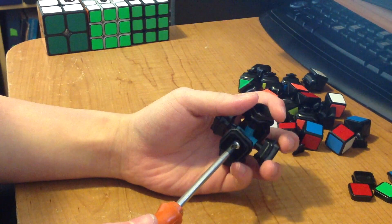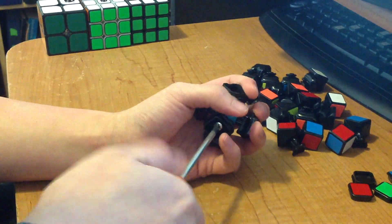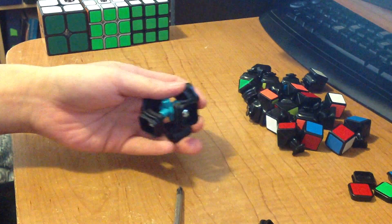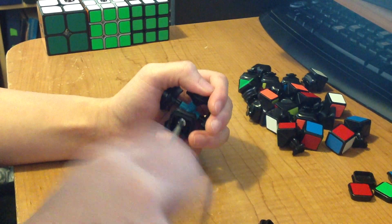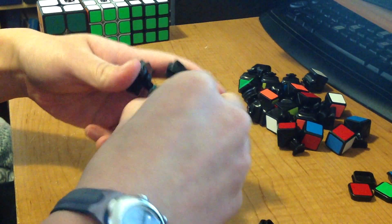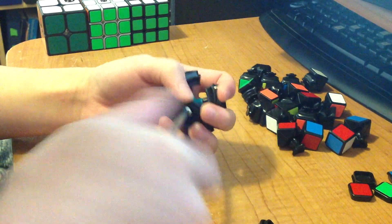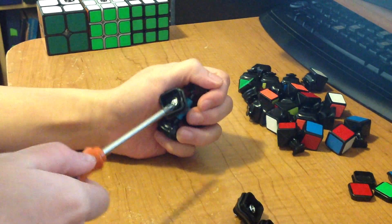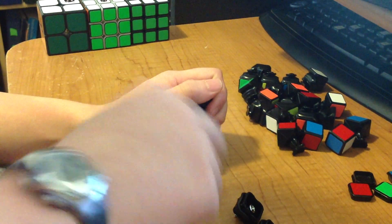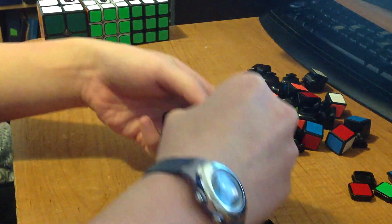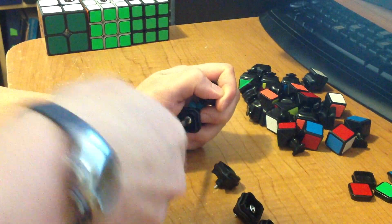So now you just take your screwdriver and you unscrew all of these. Just completely unscrew it and set them aside. So this was brand new, the unboxing. This was part of LightTake's test cubes that they gave me, so this is completely brand new. I didn't even break in any of the plastic.